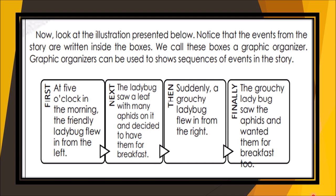Now, look at the illustration presented. Notice that the events from the story are written inside the boxes. We call these boxes a graphic organizer. Graphic organizers can be used to show sequences of events in the story — meaning the order, like the words first, next, then, and finally.